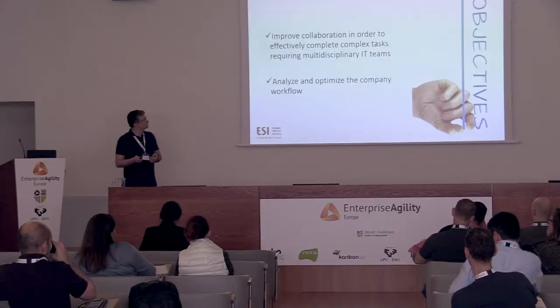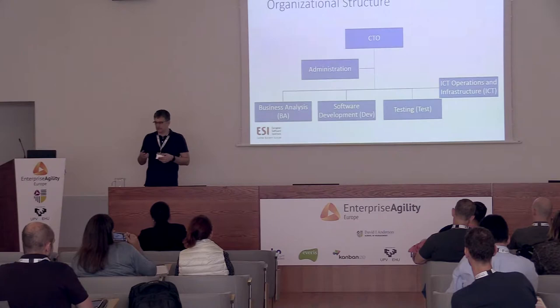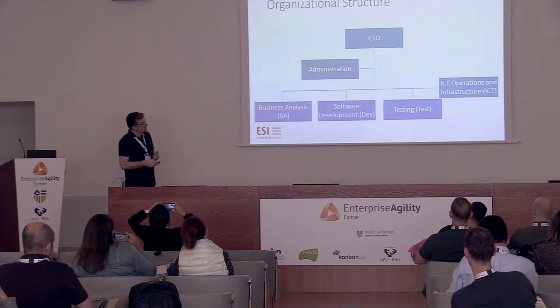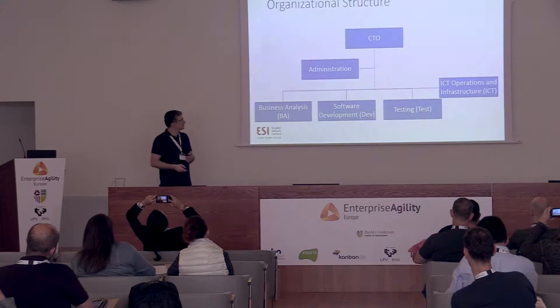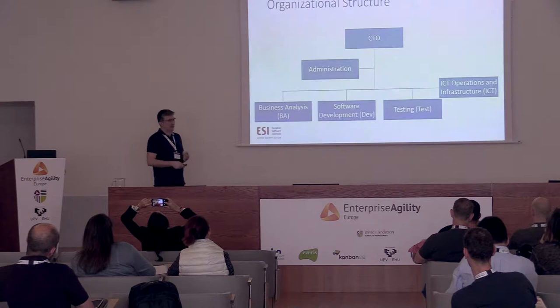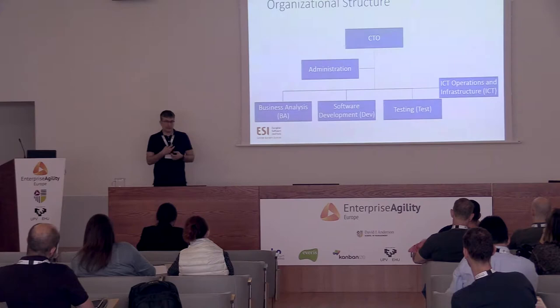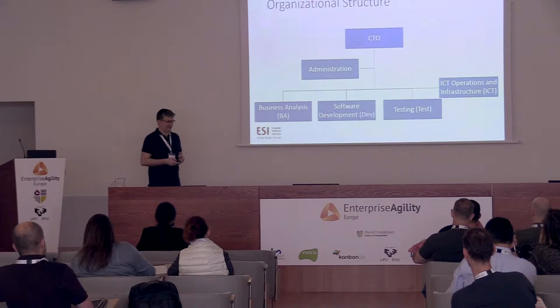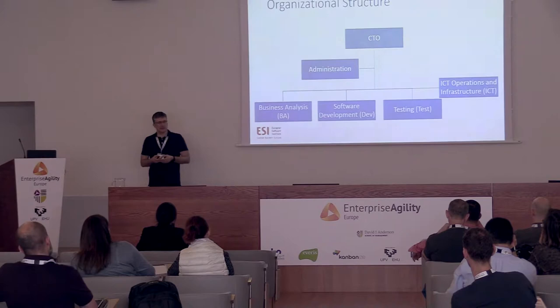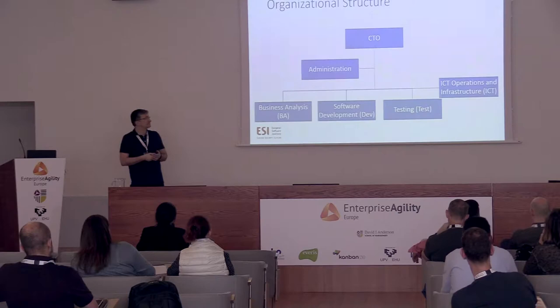The company is very traditionally organized. It had a CTO, administration, ICT operations and infrastructure — the department that deploys the software — a business analysis department, software development department, and testing department. It sounds very waterfall, and it was. And it was a successful company — it is still successful, even more so nowadays. How many of your organizations are organized in this way? When you look at this structure, you say it's not very agile — and it's not.